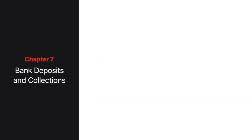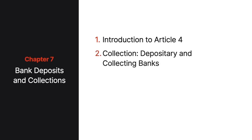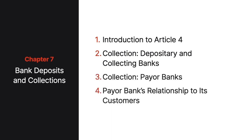Our seventh and final chapter provides an overview of Article 4 and the law dealing with bank deposits and collections. First, we'll consider the scope of Article 4 and define several key terms. Then we'll look at each of the substantive parts of Article 4, including Part 2, dealing with depository and collecting banks; Part 3, addressing payer banks; and Part 4, covering the relationship between a payer bank and its customers.